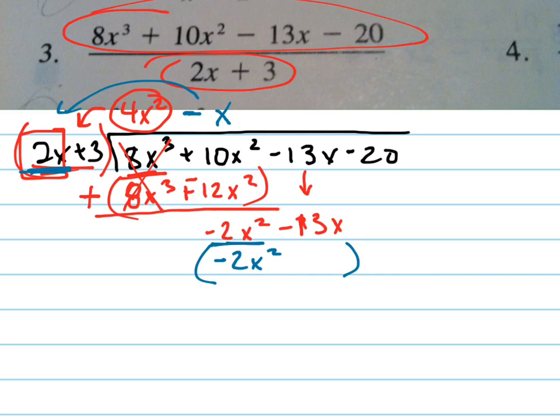Multiplying gives me negative 2x squared minus 3x. I'm subtracting those, so let's distribute the negative sign in. Those go away, this becomes negative 10x. I'll bring down the last term, which is negative 20.